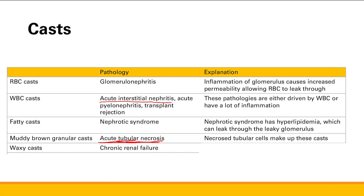Next is waxy casts. You see these in chronic renal failure. The reason is that waxy casts represent extreme urinary stasis, which happens in chronic renal failure — you're going to have poor filtration, your urine is just going to be static, you're not going to be urinating a lot. Think of it kind of like melted candle wax: if it's really static and just sits there, it solidifies — you get these waxy casts.